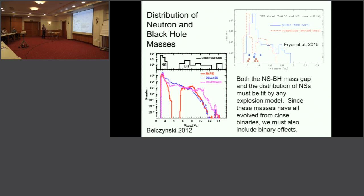The observations suggest a true gap in the mass distribution between neutron stars and black holes. To reproduce this gap in our model, you have to invoke a bimodal explosion mechanism—either a pretty strong explosion or a very weak one or no explosion at all. That's what the model requires, but we don't yet know how the engine produces that behavior.